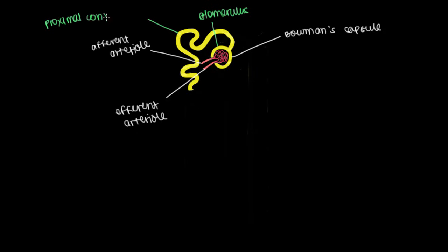And because it's so windy, we call it convoluted. It's the proximal convoluted tubule. Kind of a mouthful, but these words perfectly describe what it is.